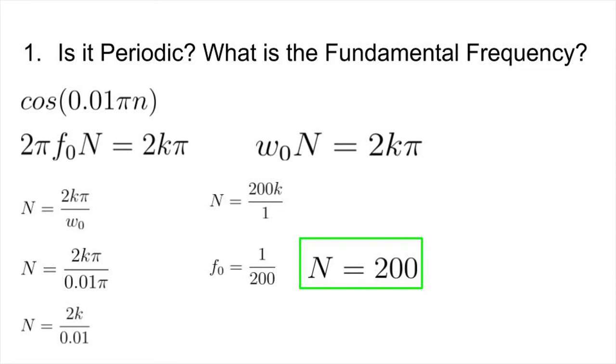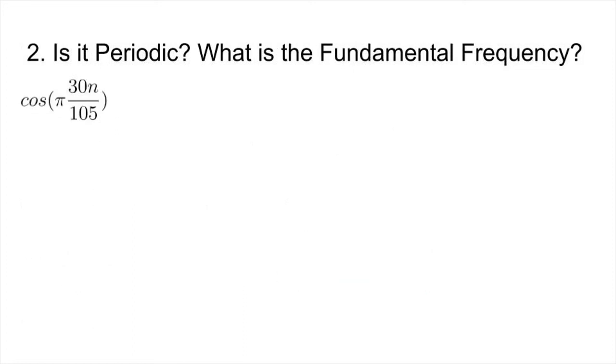Moving on to the next question. The next problem has cos(π·30n/105). Again, this question is rather similar to the previous question, so you can pause here to give it a go. Okay, here is the solution. We will start again with the same equation we have used before, N = 2kπ/ω₀. And we will plug in what we know for ω₀ to get 2kπ/(π·30/105).